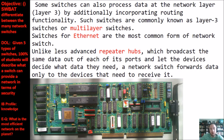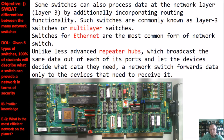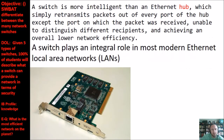Switches for Ethernet are the most common form of network switch. Unlike the less advanced repeater hubs we've talked about before, hubs broadcast the same data out of each of their ports and let the devices decide what data they need — there's no personalized forwarding. A network switch, however, forwards data only to the devices that need it, making it more efficient. A switch is more intelligent than an Ethernet hub, which simply retransmits packets out of every port except the one the packet was received on.